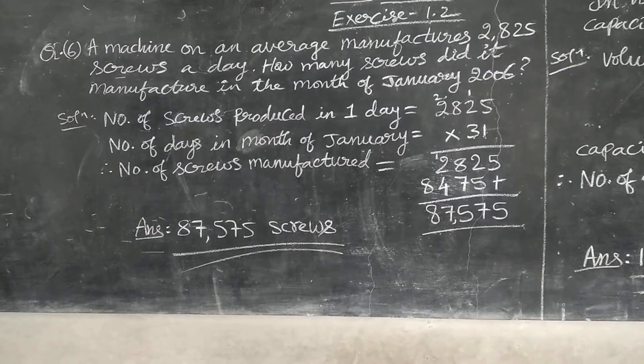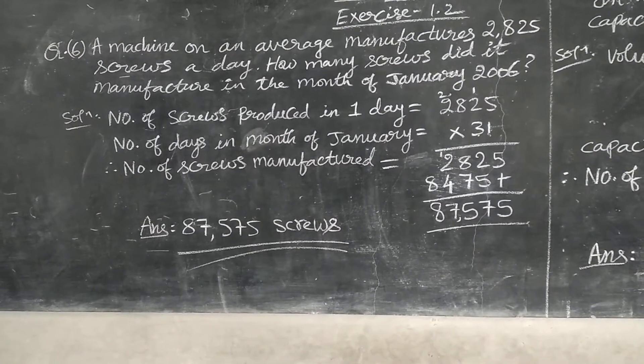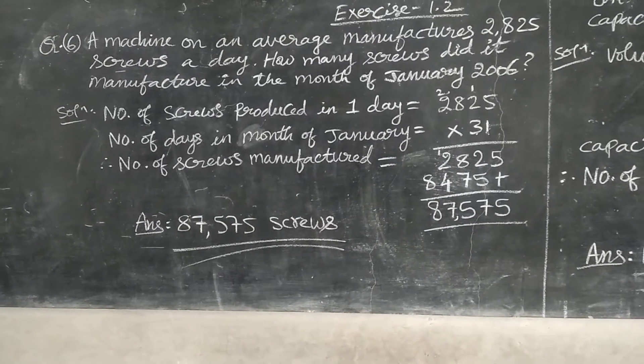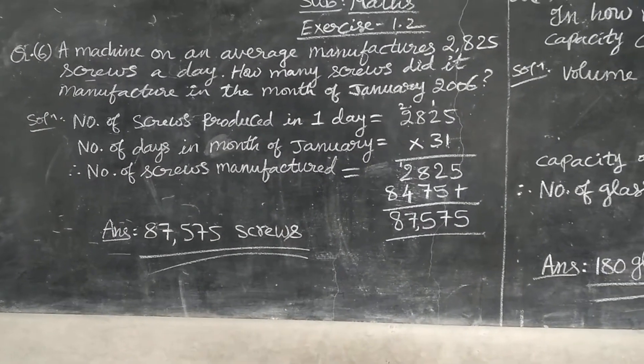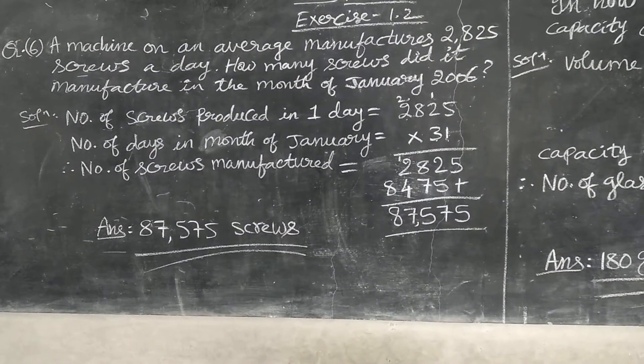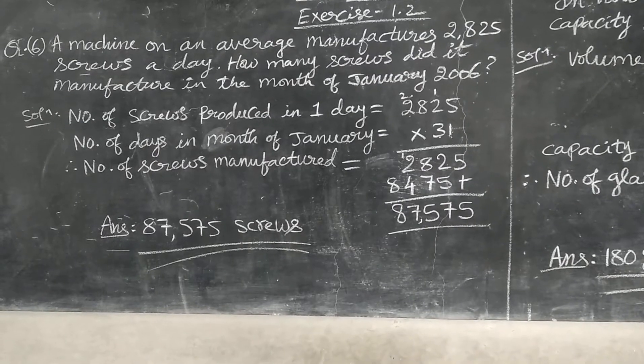How many screws are produced? Third sentence you see. Therefore, number of screws manufactured is equal to, you have to multiply. Because in one day 2825 screws are manufactured. Therefore, in 31 days means you have to multiply by 31.